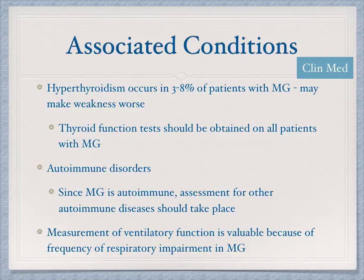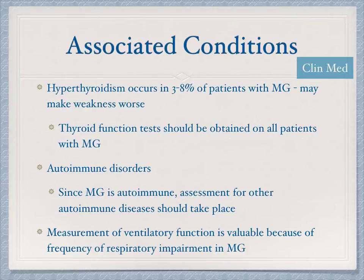Measuring ventilatory function is important in patients with myasthenia gravis. If it starts to affect the respiratory muscles, their ability to breathe will decrease. Monitoring this function is critical and can help predict when a patient's crisis is about to occur, indicating they might need mechanical ventilation.